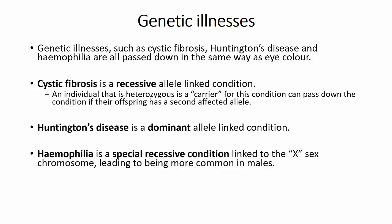Haemophilia is special as it is linked to the X chromosome, which is one of the chromosomes that determines gender. This condition is much more common in males, as they have only one copy of this chromosome paired with a Y chromosome, compared with females who have two X chromosomes. This leads to the recessive allele in males being used, as there is not an alternative copy of the gene available. Females can suffer from this condition but require both copies of the X chromosome to have the affected allele.